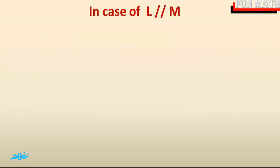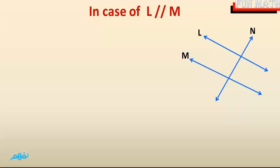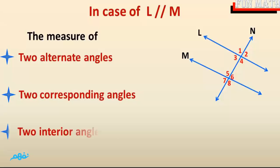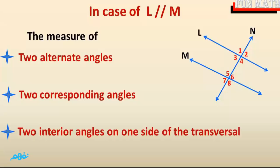Secondly, in case of L parallel to M, we draw two straight lines L and M where L is parallel to M, then draw a transversal N. By using our geometrical instruments, we can determine the measure of two alternate angles, two corresponding angles, and two interior angles on one side of the transversal.